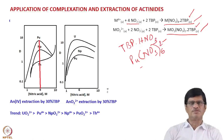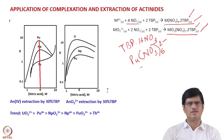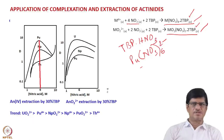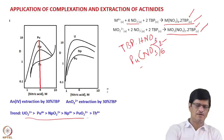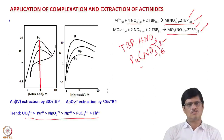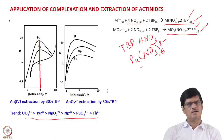The extraction of hexavalent metal ions is given in the right side figure, where uranium(VI) extraction is higher than that of neptunium(VI), which is in turn higher than that of plutonium(VI). The relative order of extraction of +4 and +6 actinide ions by 30% TBP in nitric acid medium is: U(VI) > Pu(IV) > Np(VI) > Np(IV) > Pu(VI) > Th(IV), with thorium(IV) being the least extracted.